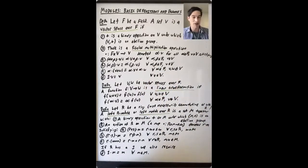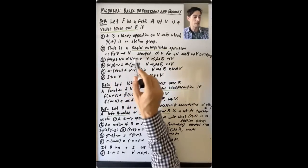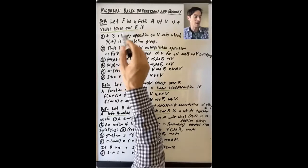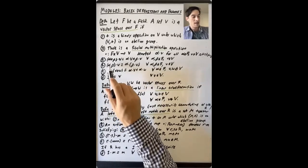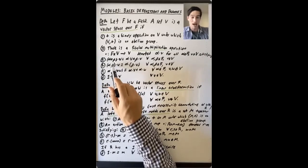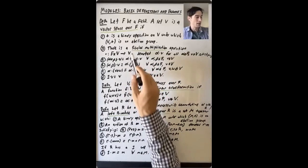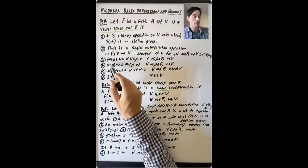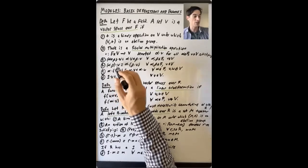This operation has to satisfy a kind of distribution property: (alpha plus beta) dot v equals alpha dot v plus beta dot v, where the first plus is addition in f and the second plus is the binary operation on v. You also need that (alpha times beta) dot v — where this is multiplication in f — equals alpha dot (beta dot v). So beta dot v is some vector in v, and alpha acting on that vector is the same as if you multiplied first and then acted on v. The scalar multiplication is compatible with multiplication in your field f.